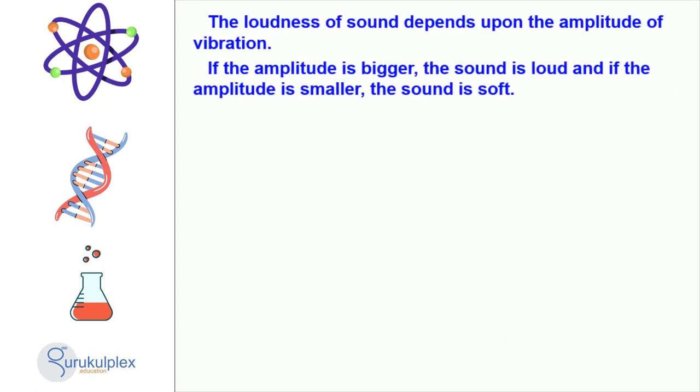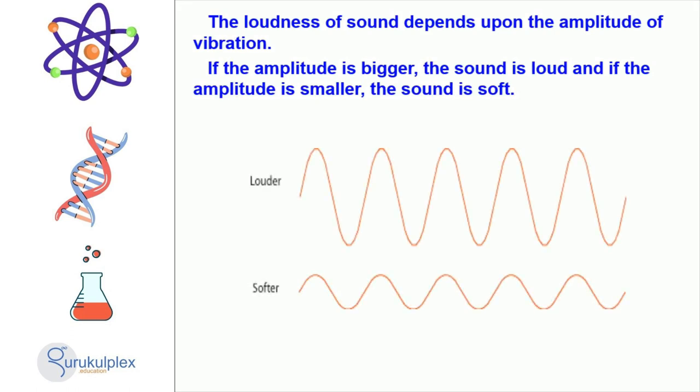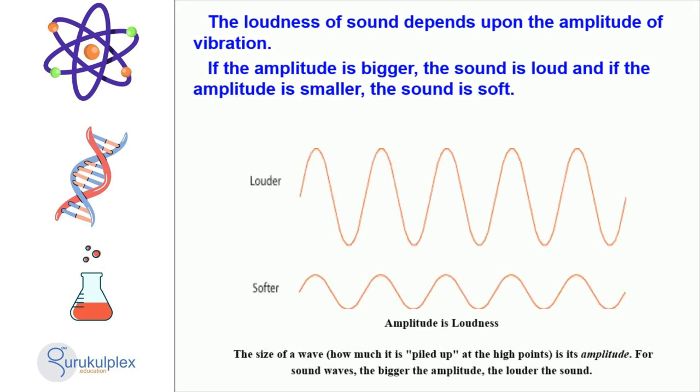Sound is produced when vibrations cause changes in air pressure. The size of the resulting wave, or the amplitude of the vibration, determines the loudness of the sound. As the amplitude gets bigger, the sound gets louder. This relationship can be seen in the table beside the slide, which shows a correlation between the amplitude of the wave and the loudness of the sound it produces.